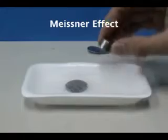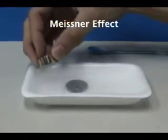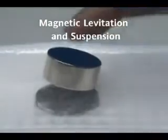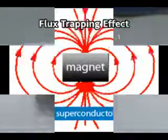In summary, through different magnetization steps, the superconductor will display different responses: the Meissner effect, magnetic levitation and magnetic suspension, and the flux trapping effect.